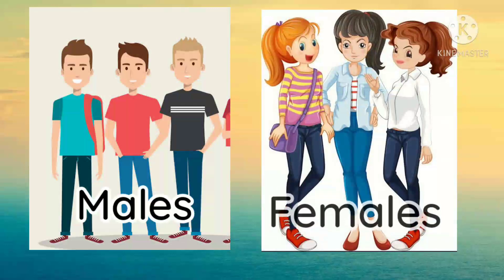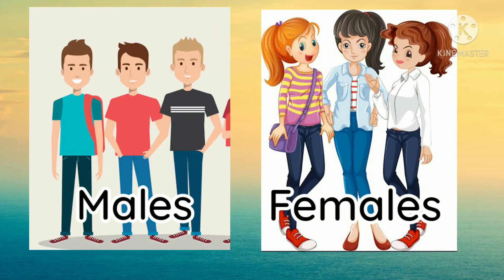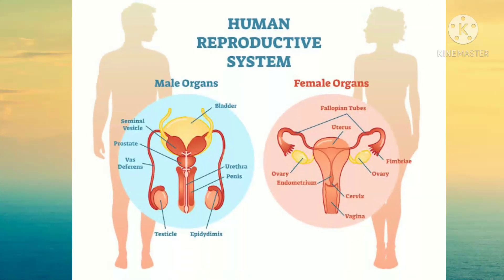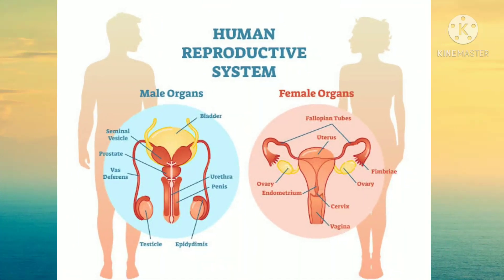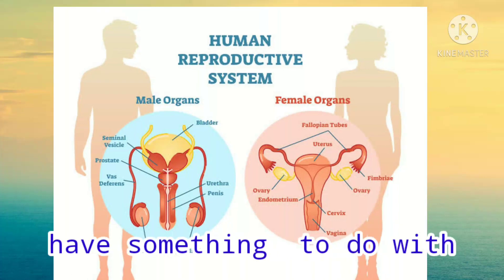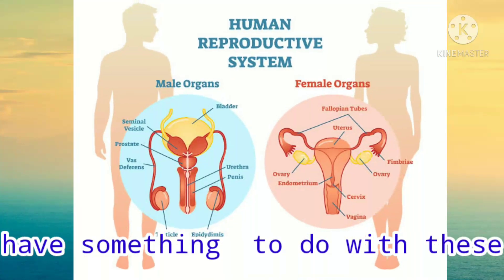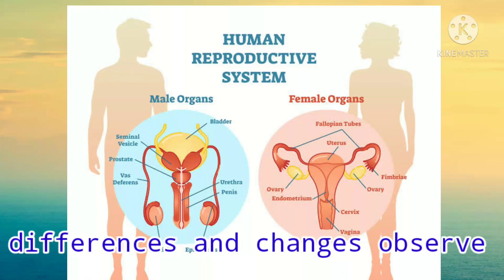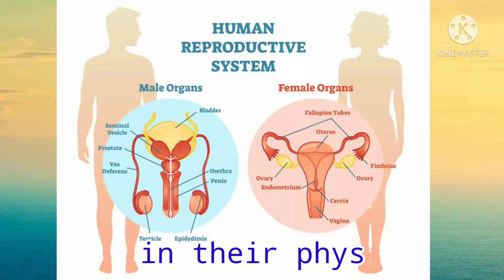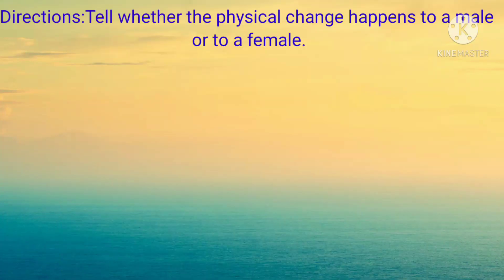Males and females have differences in body structures. When you look at or observe a person, you can tell whether that person is a male or a female. The male and female reproductive systems have something to do with these differences in changes observed in their physical appearance. Tell whether the physical change happens to a male or to a female.